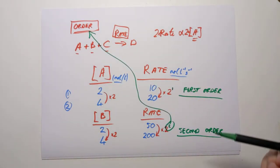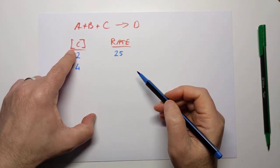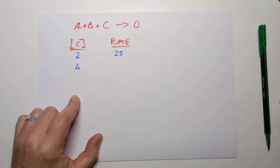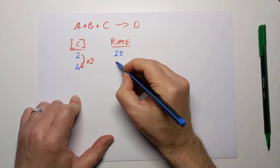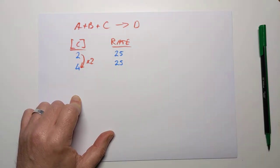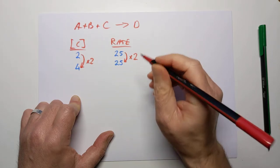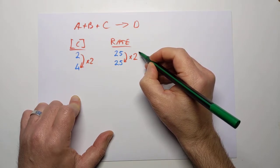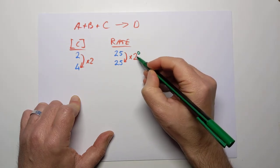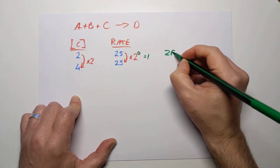Now chemical C. We have changed the concentration of C from 2 to 4 — again, doubled it — and we find that the rate stays exactly where it was. It appears not to have changed, because it hasn't. So what is the multiplier? It's 2 to the power of 0, because anything to the power of 0 equals 1. So we've multiplied the rate by 1. This is called a zero-order reaction.